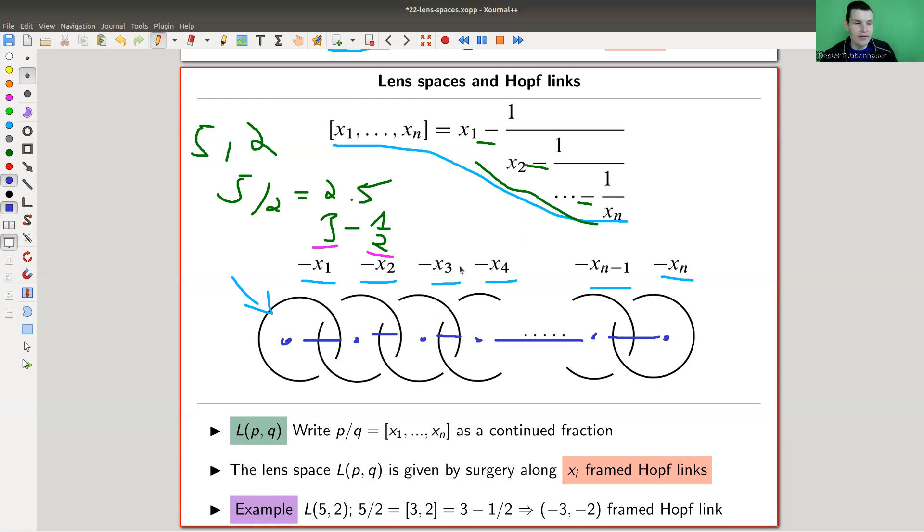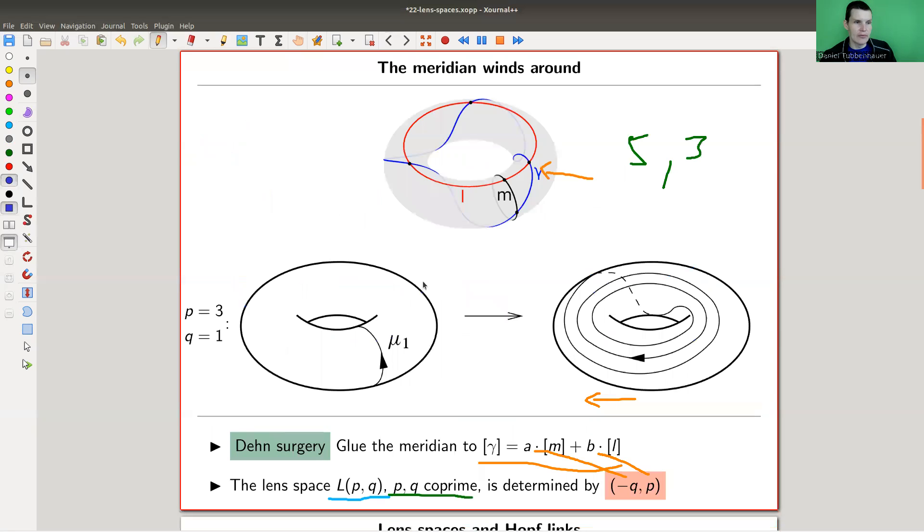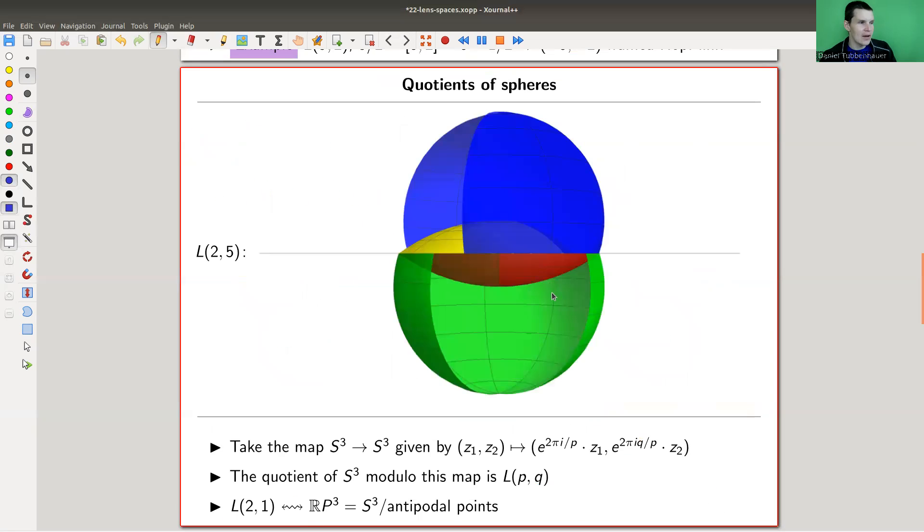This picture is fairly new compared to geometric topology itself. The first definition of those spaces was much more involved. Let me show you the animation from Wikipedia of the original construction of this space, which explains the name lens spaces. These little things here are called lenses, that's where the name lens space comes from, like the lens in the eye.